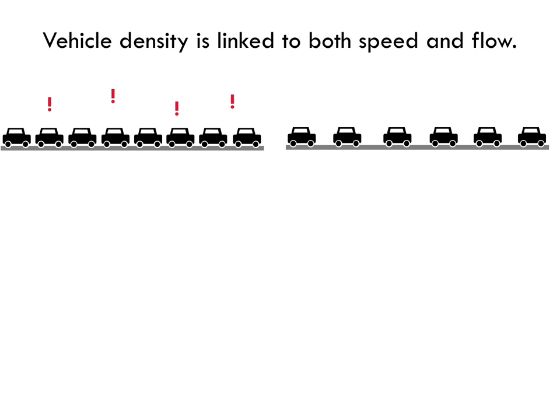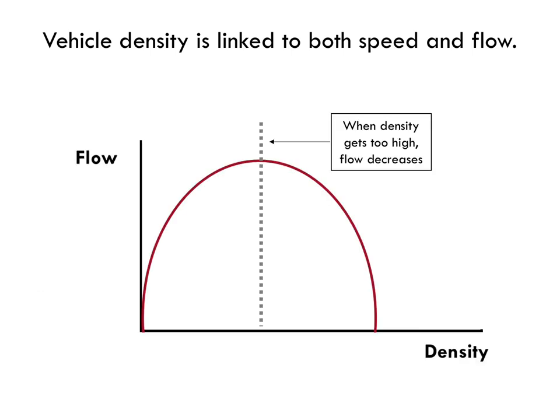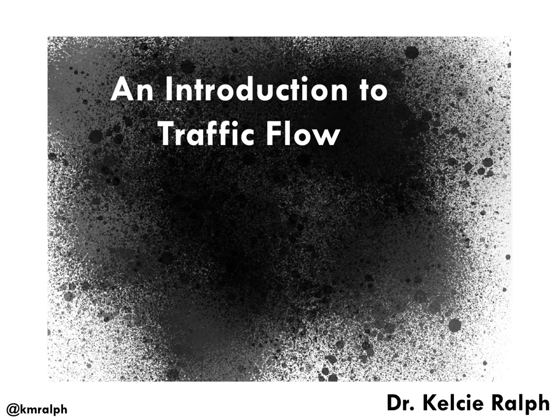So far, we've seen that vehicle density is linked to both speed and flow. When density gets too high, speeds fall and flow decreases. To recap: vehicle density affects speeds non-linearly. Flow is the number of cars passing by a point each hour, and flow is equal to density times speed. Managing vehicle density keeps speeds and flow high. That's all for today — until next time, safe travels.